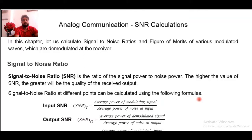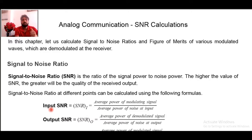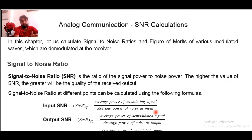Signal to noise ratio at different points can be calculated using the following formulas. First, input SNR: if you are looking to find out the input SNR, you have a system where input is provided during transmission. Some noise may come up and create disturbances. At the input side, we find out the input SNR, which is calculated as the average power of the modulating signal divided by the average power of noise at input. The modulating signal is the message signal that is going to be modulated.